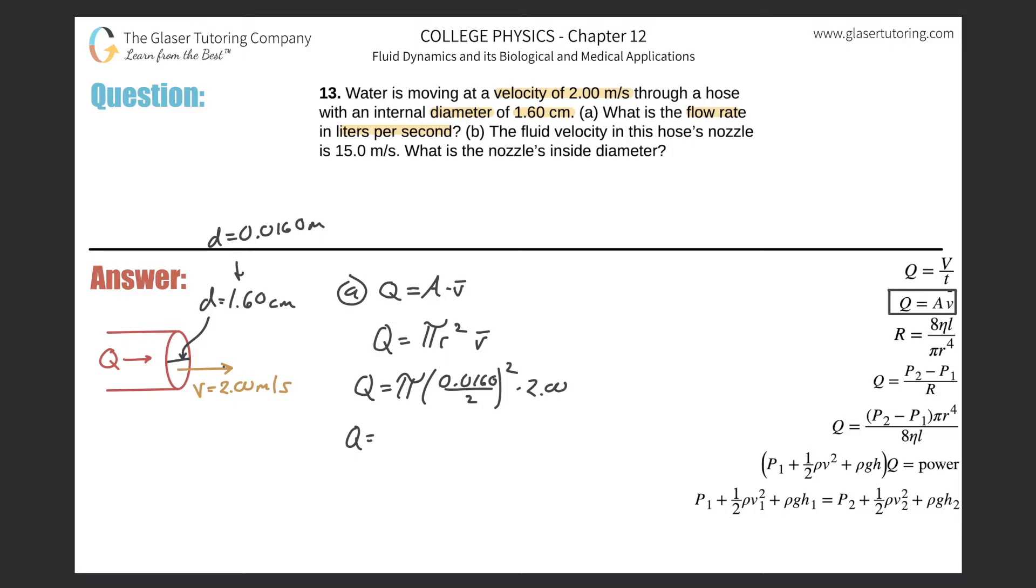So there's 4.02, 4.02 times 10 raised to the negative four. Negative four. And this is now, what do we have? Cubic meters per second. Because the distance unit was a meter and time was in second, as you can see from the velocity. So this is the volume flow rate.